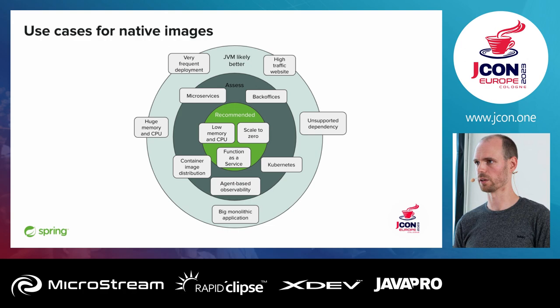Let's take a look at the use cases where we recommend native image. For example, if you want to scale to zero — when there is no load, you scale instances to zero and don't pay for CPU or memory. If you've got low memory and CPU resources, native image uses less memory than the JDK. Function-as-a-service is also good because they start really fast and don't consume much memory. Back-office applications and microservices are also good candidates, since the JVM has overhead for JIT and garbage collection that is reduced with native image.